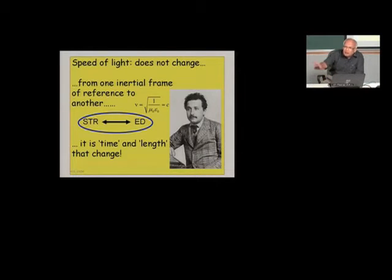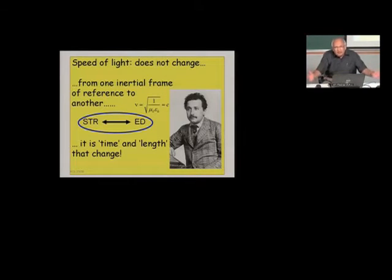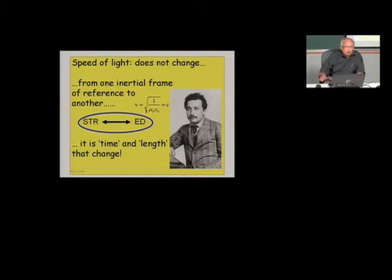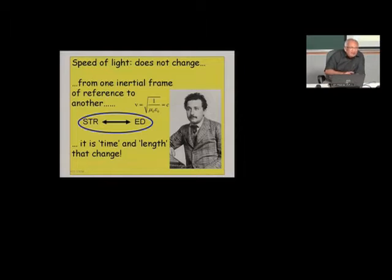Quantum mechanics is applicable to large-sized objects like you and me, the earth itself, the galaxies — you can write the Schrödinger equation for a galaxy and do astronomy using quantum theory, because it is not at all a requirement that quantum mechanics should be used only for microscopic objects. For all phenomena quantum mechanics is not only applicable, it is necessary, it is mandatory, it is required.